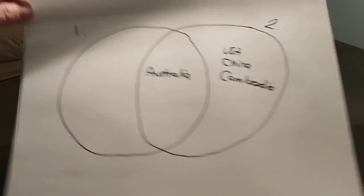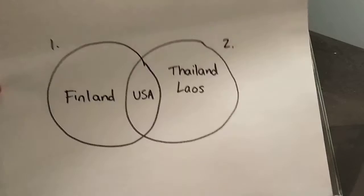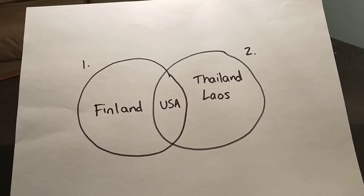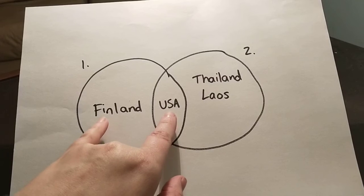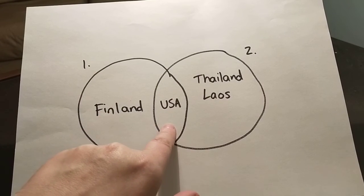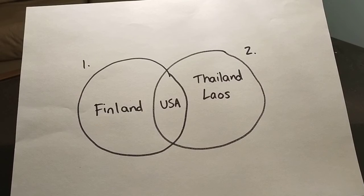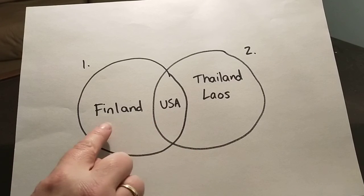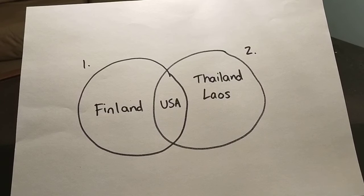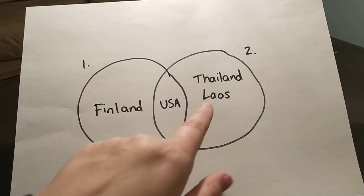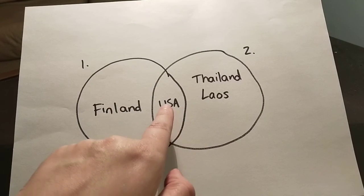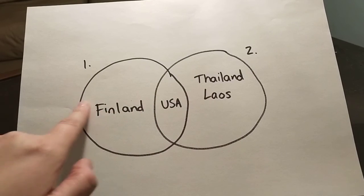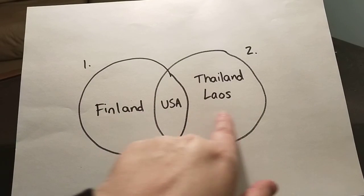Now I have another example here that I prepared earlier. This chart represents a student that I interviewed during the process of researching my first book. In this case, the student has two legal cultures — two passports, two citizenships: Finland and the US. As you can see from this chart, the student has lived in the US but has not lived in Finland, and has also lived in Thailand and Laos but doesn't have citizenship there. The US is in the overlap, Finland is legal but not lived in, and Thailand and Laos are lived in but not legal.